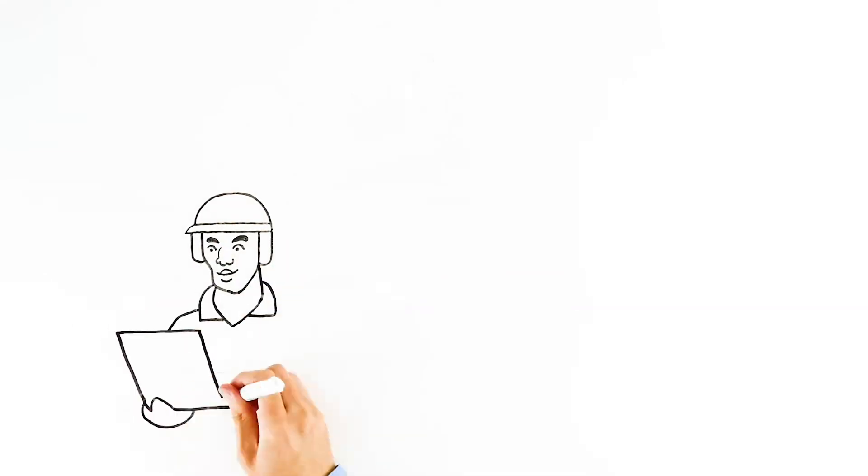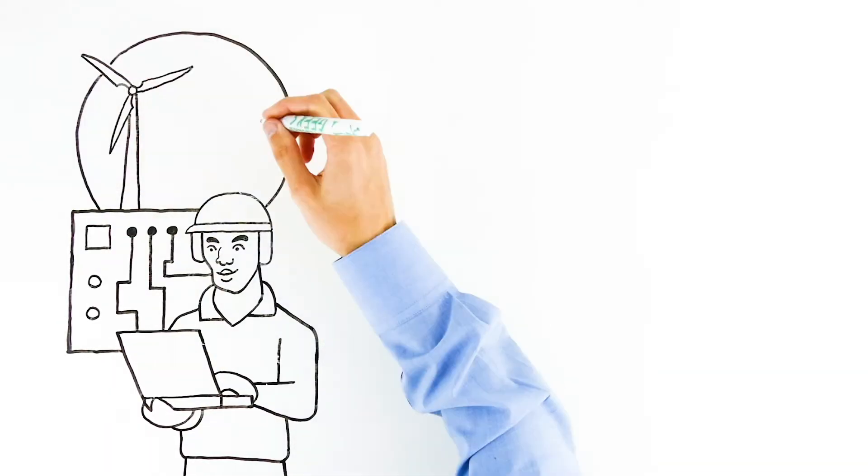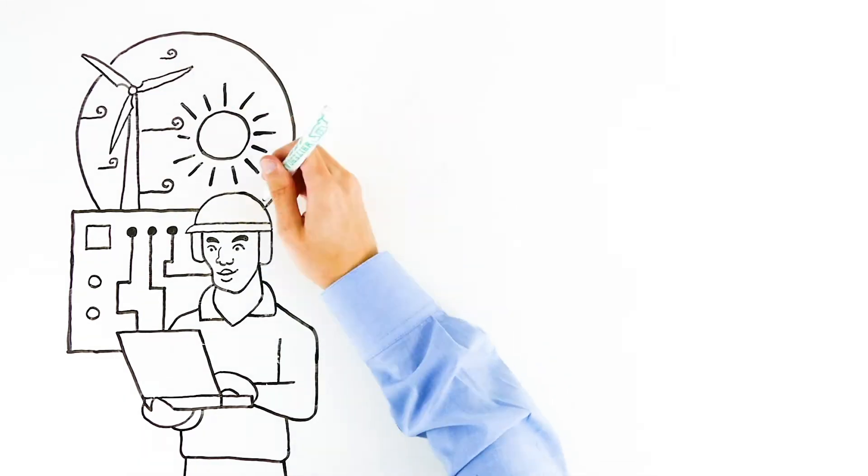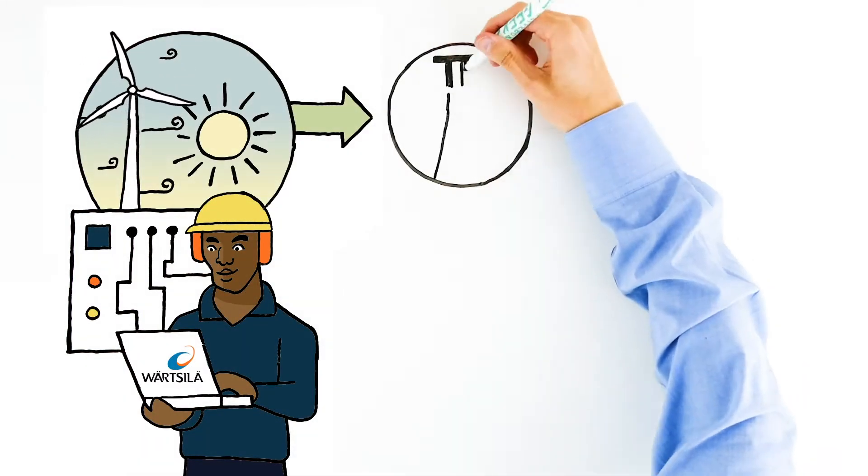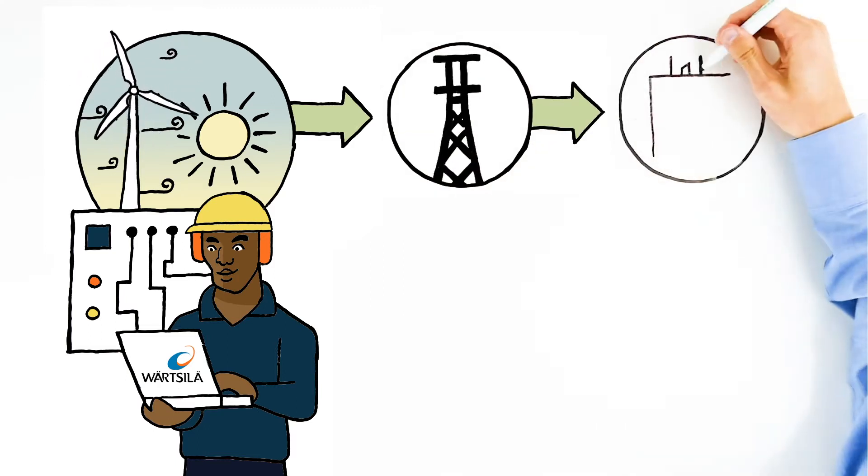This is Mark, a plant operator for an independent solar and wind power producer selling electricity to a large public utility power grid. The public utility maintains and oversees the transmission and distribution lines that move electricity to homes and businesses.